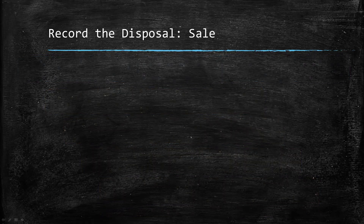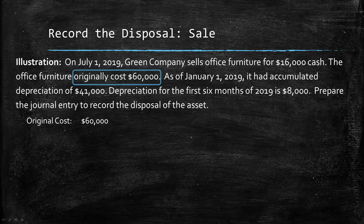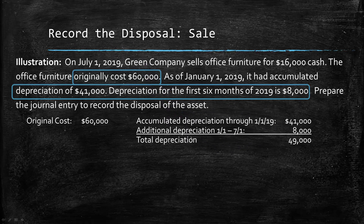Let's look more in depth at a sale. Here we have Green Company with the same information, and we need to find all those components. The original cost was $60,000 for the equipment. They originally had accumulated depreciation of $41,000, but we've added the additional $8,000 with the previous journal entry, so the total depreciation is $49,000. Lastly, they received $16,000 cash in proceeds for that sale.